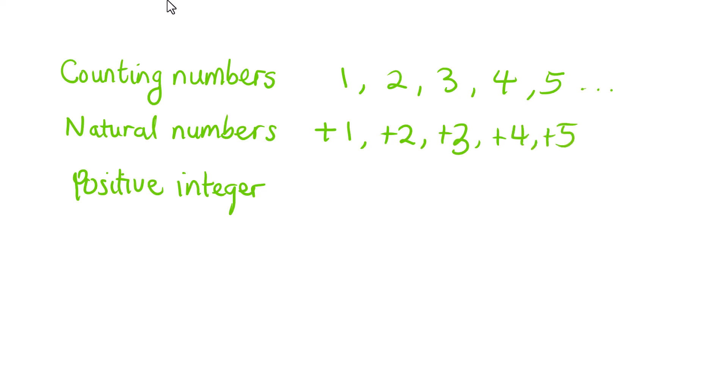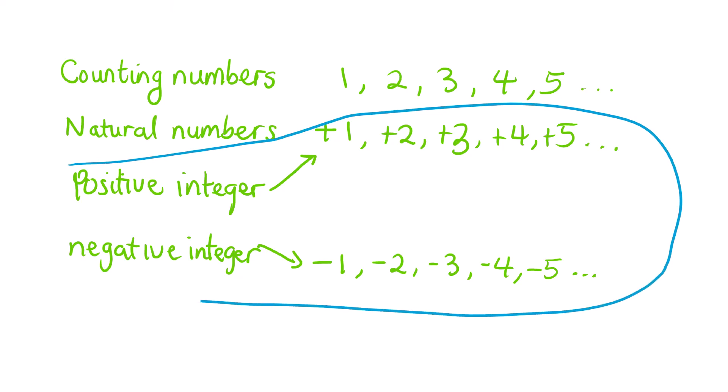The next part is the opposite of positive integers, which are known as negative integers. Negative integers look at the other side of the number line: negative 1, negative 2, negative 3, negative 4, negative 5 and so on. All the positive and negative integers are called integers.